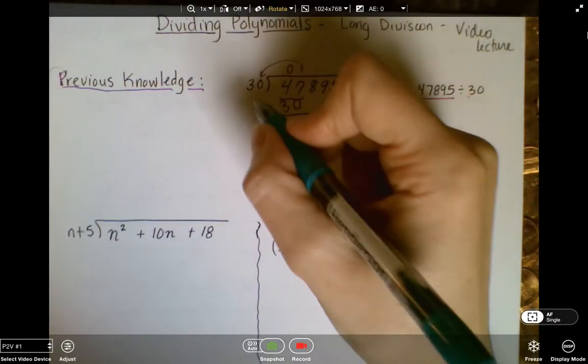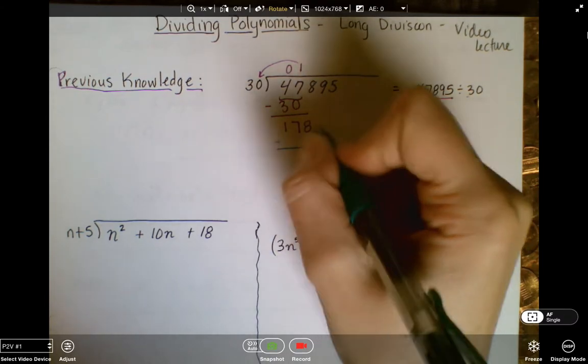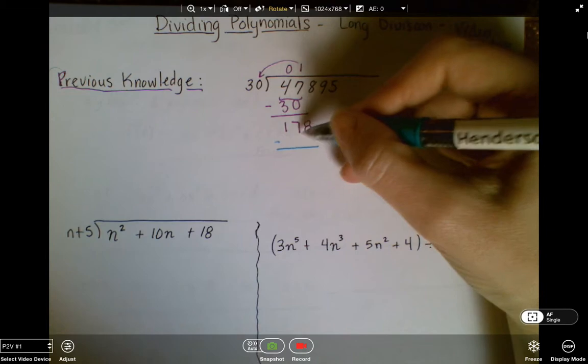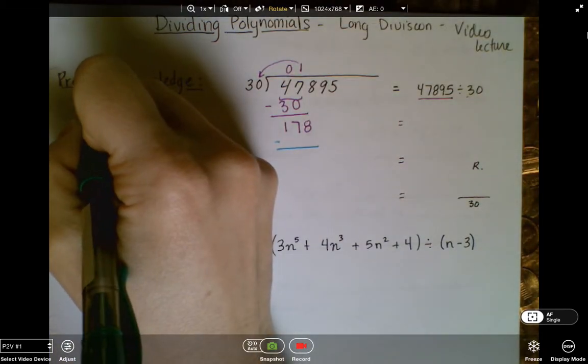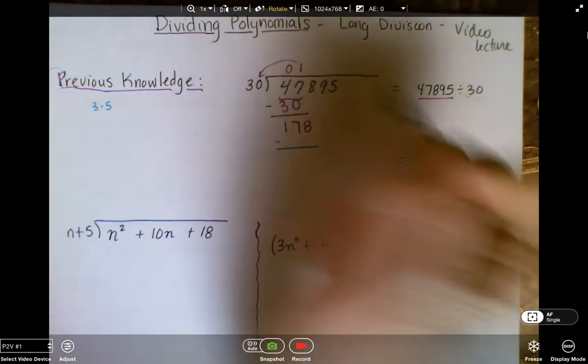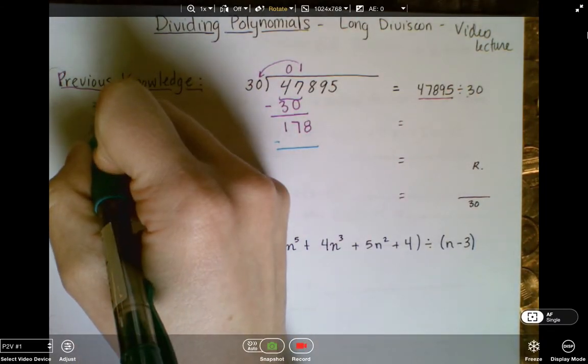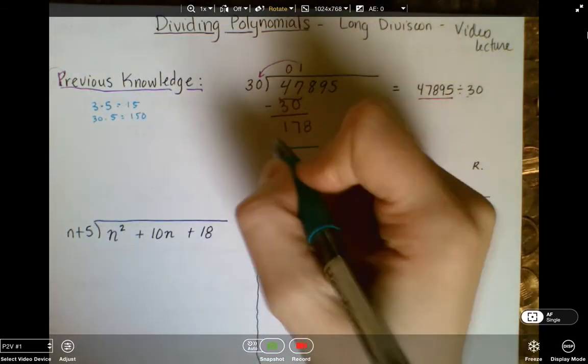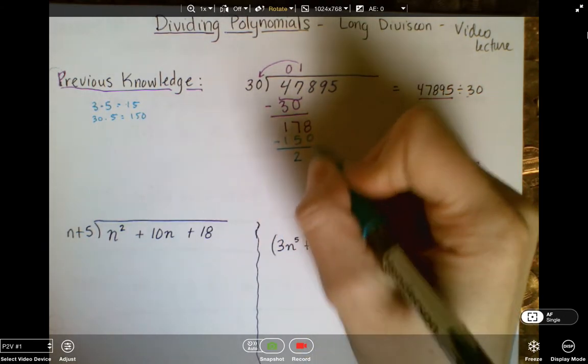And then 30 times what gets me as close as I possibly can to 178? Well, 3 times 6 is 18, so 3 times 5 is going to get us as close as we're going to get. So 3 times 5 is 15, so 30 times 5 is 150. And then I'm going to subtract and get 28.